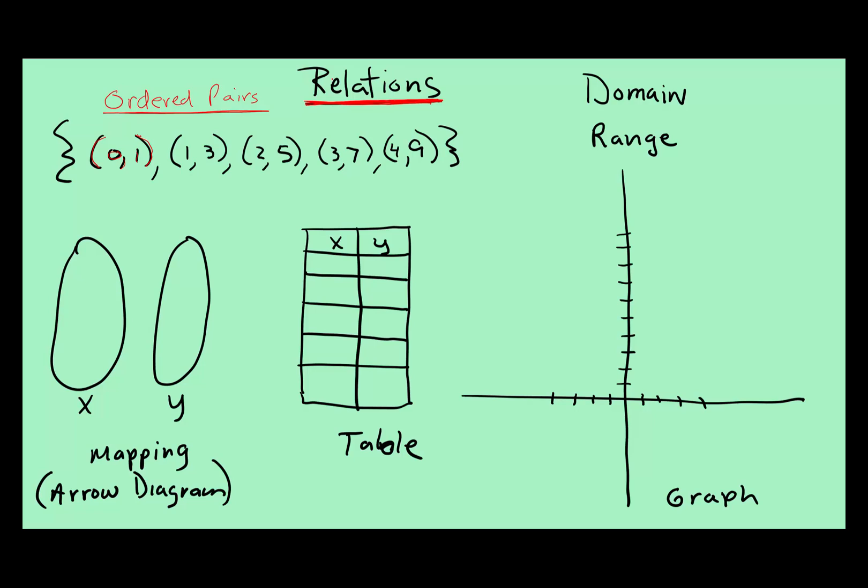Well, there's more than one way to show these relations. You can take those ordered pairs, and you can put them into a table. So remember, if you say the alphabet, X always comes before Y. So there's the X value, there's the Y value. There's the X value, Y.